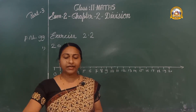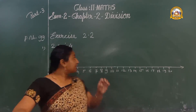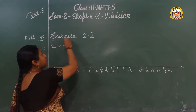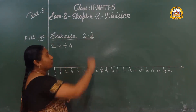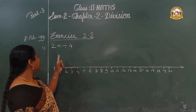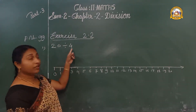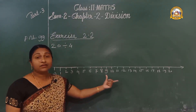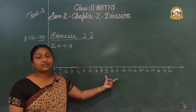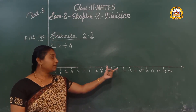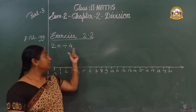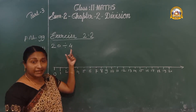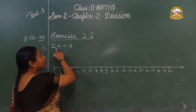Page number 99, Exercise 2.2. First one: 20 divided by 4. With the help of the number line, let us subtract 4. How many times? Let us check.